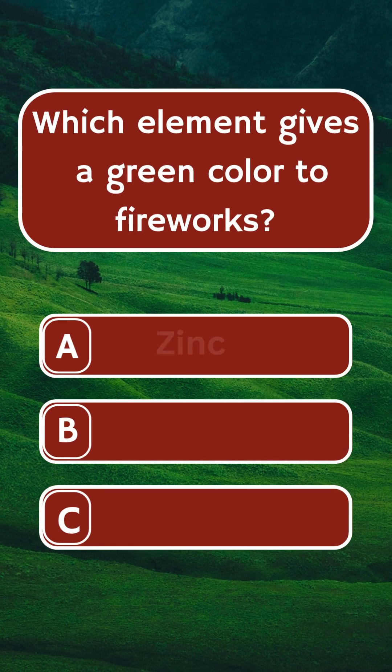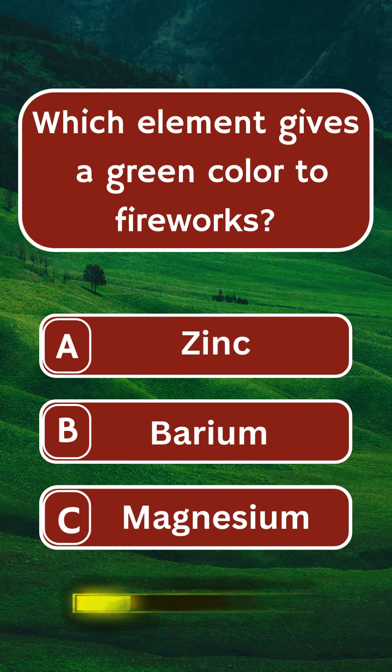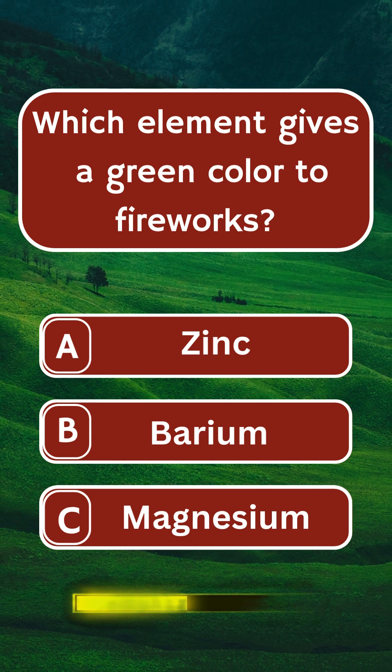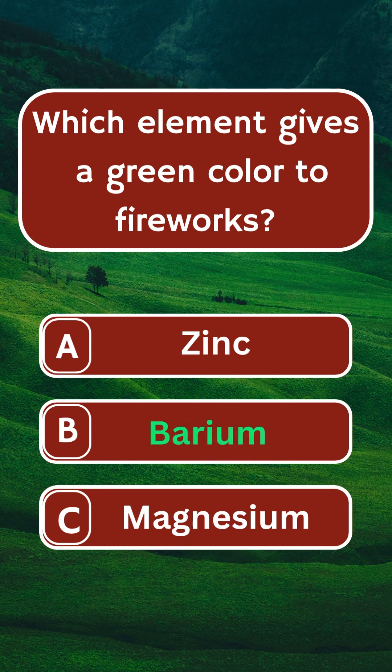Question 3: Which element gives a green color to fireworks? The answer is barium.